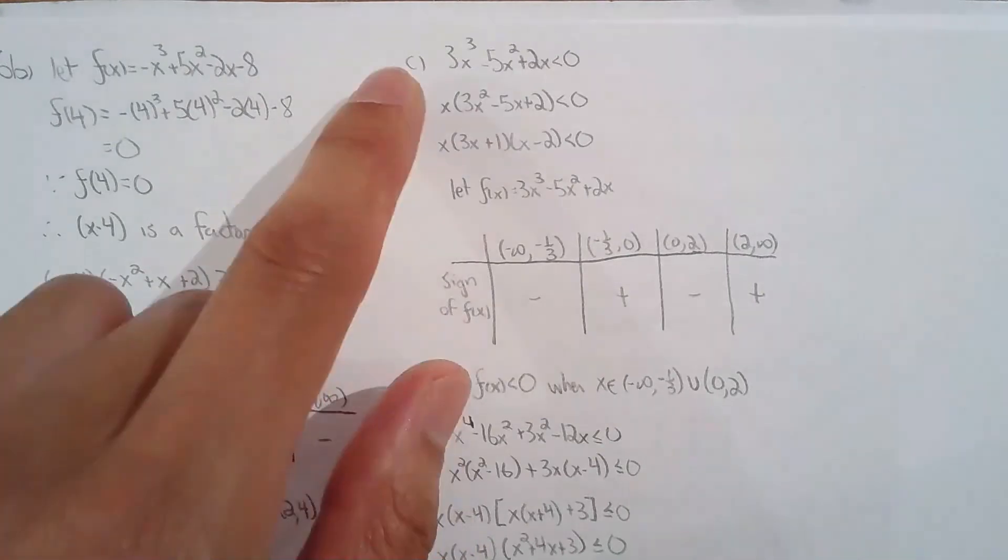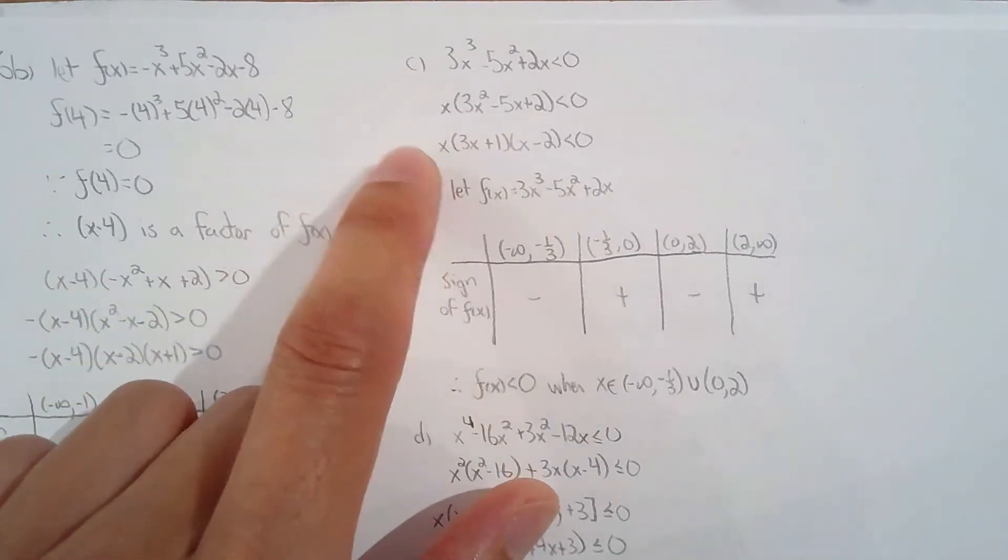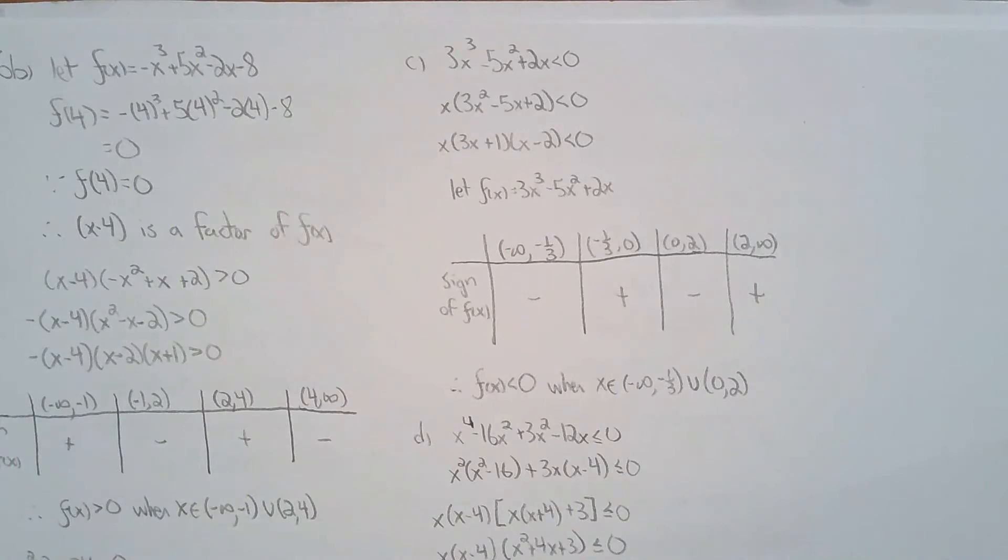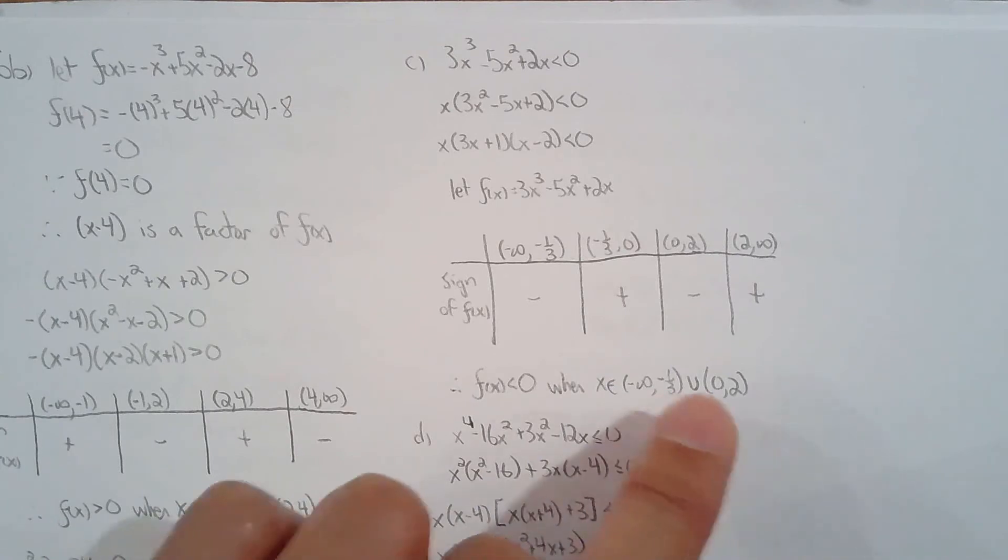6c, factor. This one's pretty easy to factor. You don't need any factor theorem. And then use your interval table, state the solution. So if they don't specify what method of stating a solution, I will always use interval notation. I find that the fastest.